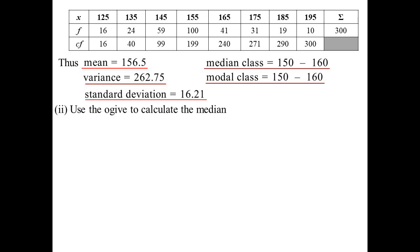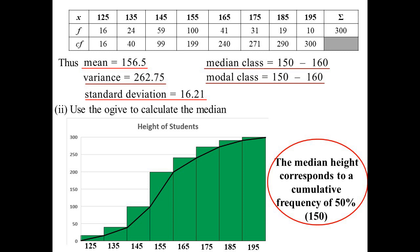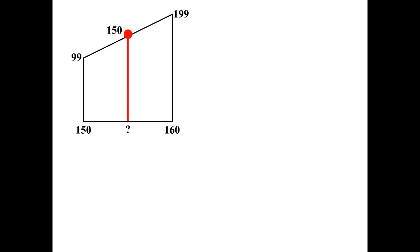But here's how you can use the OGIVE to calculate the actual median itself. There's our cumulative frequency polygon. Draw in the OGIVE. There it is. The median height will correspond to a cumulative frequency of 50%, which in this case will be 150. So if I draw a line across and go down, well, it's telling me it's in that class. But is it 155? It might not necessarily be 155. Where is it falling down there? So if we just look at this piece of the OGIVE. So we're going from 99 to 199. We're stopping at 150.